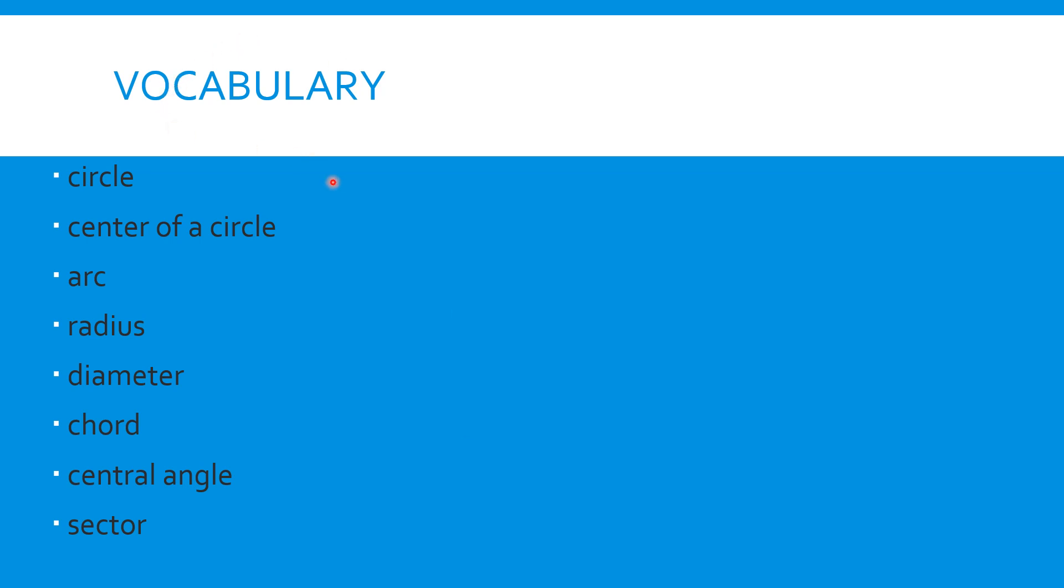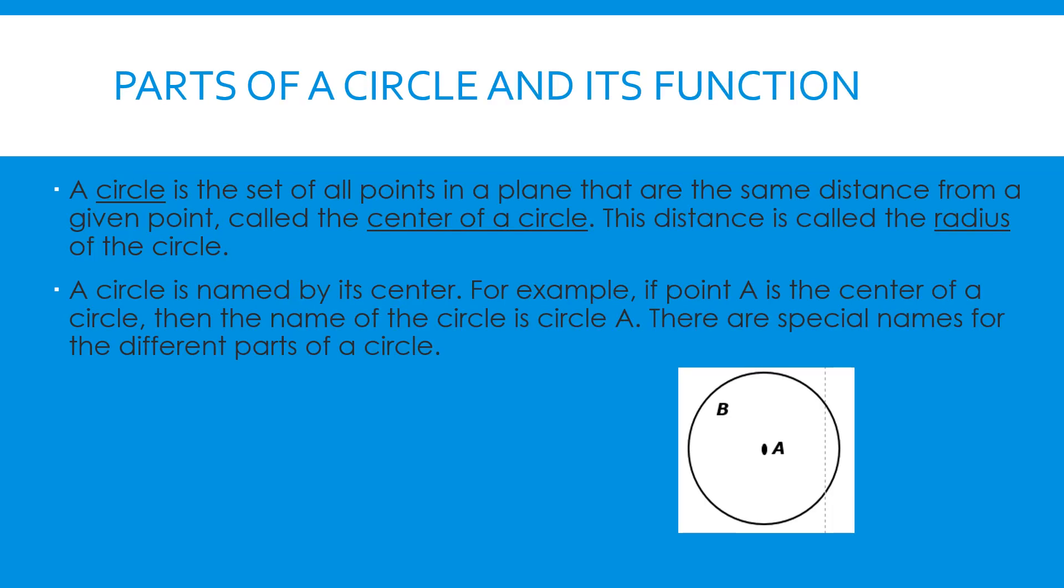We have the vocabulary so we will know about circle, the center of the circle, arc, radius, diameter, chord, central angle, and sector. A circle is a set of all points in a plane that are the same distance from a given point called the center of a circle. This distance is called the radius of the circle. A circle is named by its center. For example, if point A is the center of a circle, then the name of the circle is circle A. There are special names for different parts of the circle, so this circle is named as circle A.